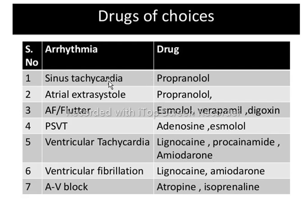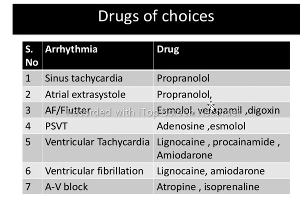The types of arrhythmia and preferred drugs: for sinus tachycardia — propranolol; atrial extrasystole — propranolol; atrial fibrillation and flutter — esmolol, verapamil, and digoxin; PSVT — adenosine and esmolol; ventricular tachycardia — lignocaine, procainamide, and amiodarone; ventricular fibrillation — lignocaine and amiodarone; AV block — atropine and isoprenaline. This completes the topic of anti-arrhythmic drugs.